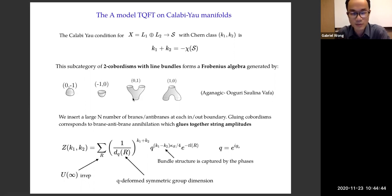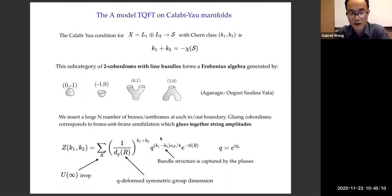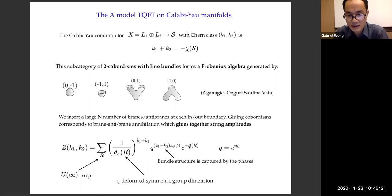Even though these look like TQFT objects, we have to remember that it's really string theory. When we glue them together, we put a large-N number of branes and anti-branes on the slices represented by the circles, and we glue them together by brane-anti-brane annihilation. The answer we get, according to Aganagic and collaborators, is a general partition function on a Calabi-Yau of this form: a sum over representation labels of U(infinity), a degeneracy factor that's a Q-deformed symmetric group dimension, a phase with exponent giving the bundle structure, and a Boltzmann factor with area T and L(R) being the number of boxes in the Young tableau for R.